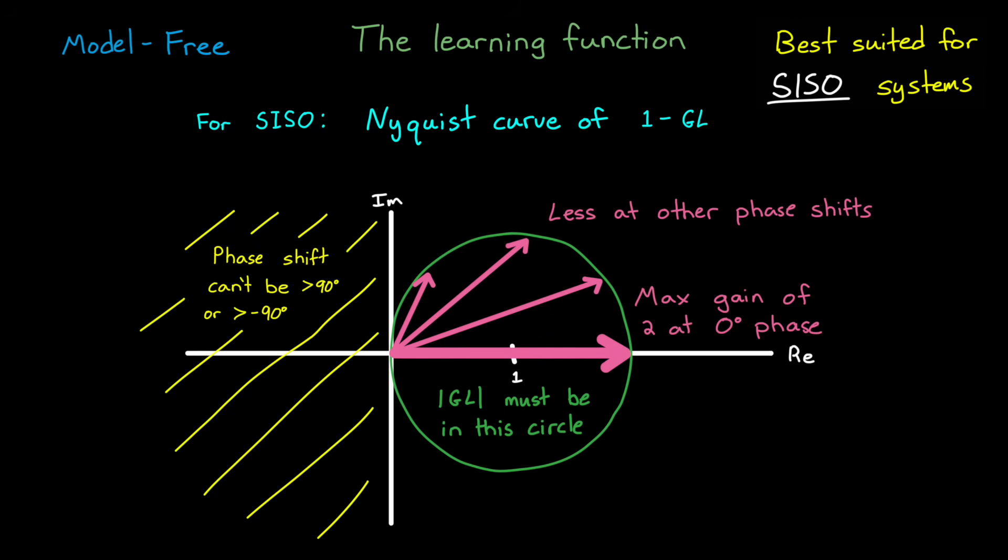Now, many real world systems break this requirement since often they behave like higher order systems that have more than minus 90 degrees of phase shift. And that's a problem.